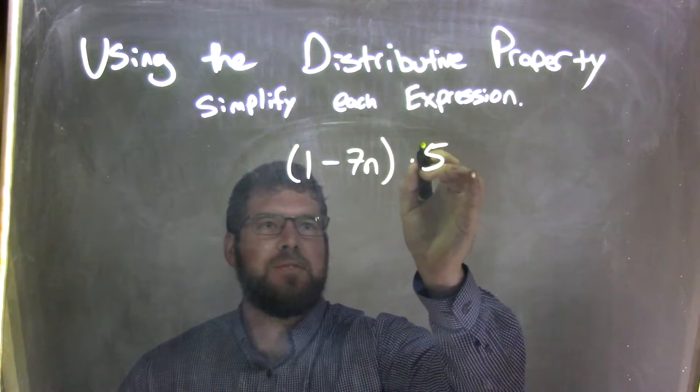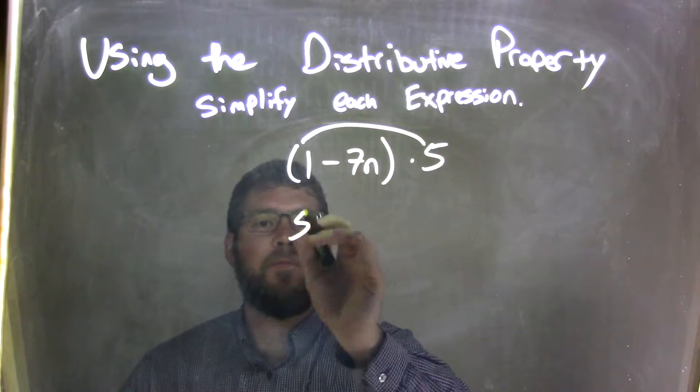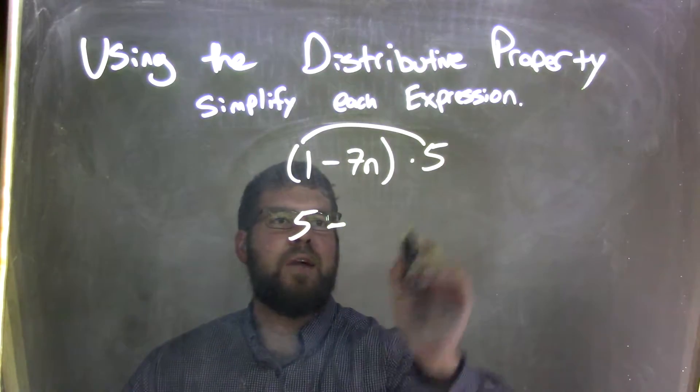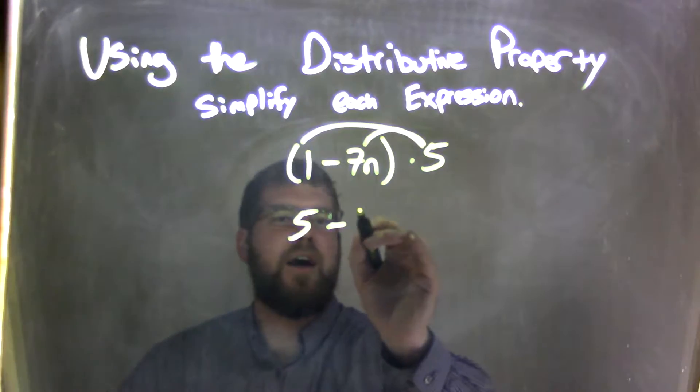That's 5 times, that's multiplication. So 5 times 1 first is 5. Now the minus sign comes down, so now we have 5 times 7n, which is 35n.